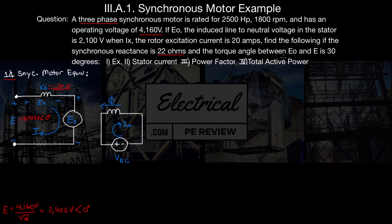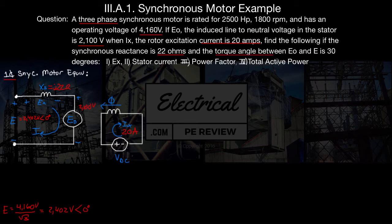Anything else we can find? The induced line-to-neutral voltage in the stator is 2,100 volts — that's EO. So we have 2,100 volts in our stator when IX equals 20 amps. Also, the torque angle between EO and E is 30 degrees, which means theta EO minus theta E equals 30 degrees, so we know EO is going to be lagging.